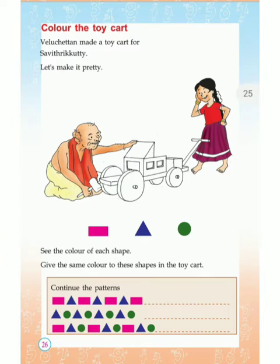Likewise, you want to complete that table. The second pattern is triangle, circle, triangle, circle. If you follow the pattern, you want to write the next shapes.